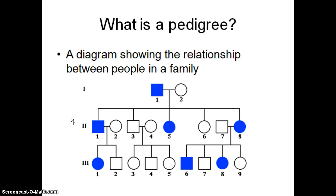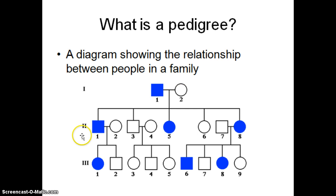If a person is fully colored in, that actually means they have a disease. In this particular pedigree, there isn't anyone shown as a carrier. If they were a carrier, we would color them in halfway. So we color her in halfway if she carried a disease, and we would do the same here. In this pedigree, people are either showing the disease — like this person, this person, this person, this person — or the people that are not shaded do not have the disease.